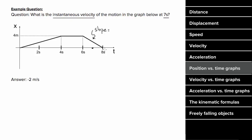Since the slope is constant, we can find the slope between any two points in this region. Choosing six seconds and eight seconds is most convenient, so we use rise over run. The rise is the change in position, and the run is the change in time. Between six and eight seconds, the graph drops by four meters, so the displacement is negative four meters, and the time elapsed is two seconds. Since the slope in this region is negative two meters per second, that also equals the velocity in this region.